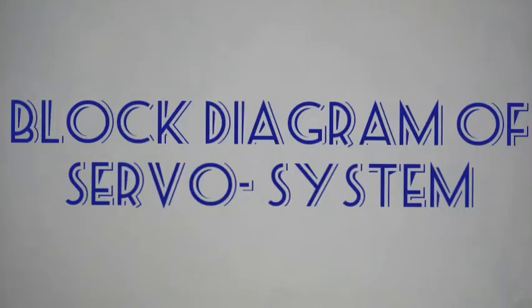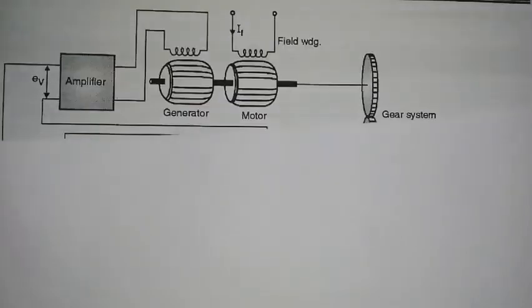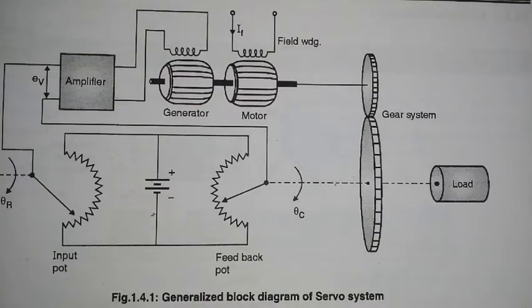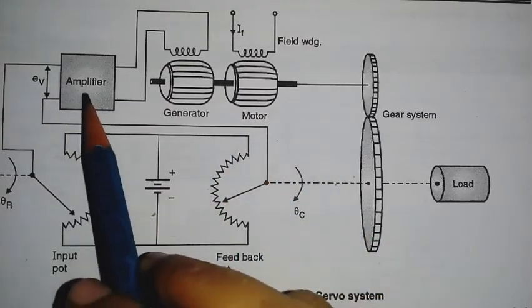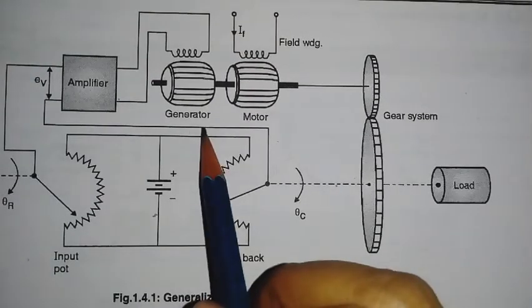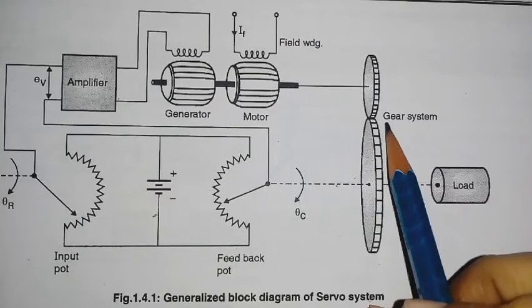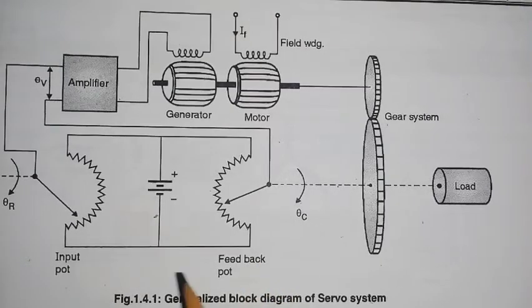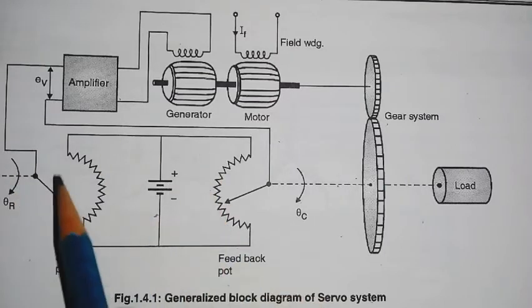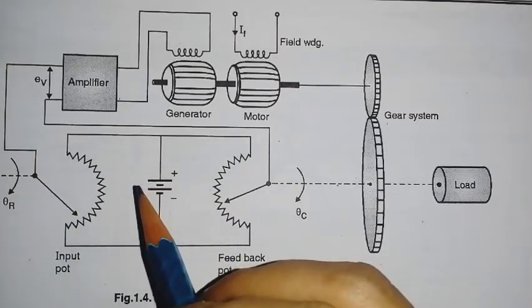Hello students. Today we see the next topic in control system — that is the block diagram of a servo system. In this block diagram, we use an amplifier, generator, motor, gear system, load, and potentiometer — that is the input port and feedback port.